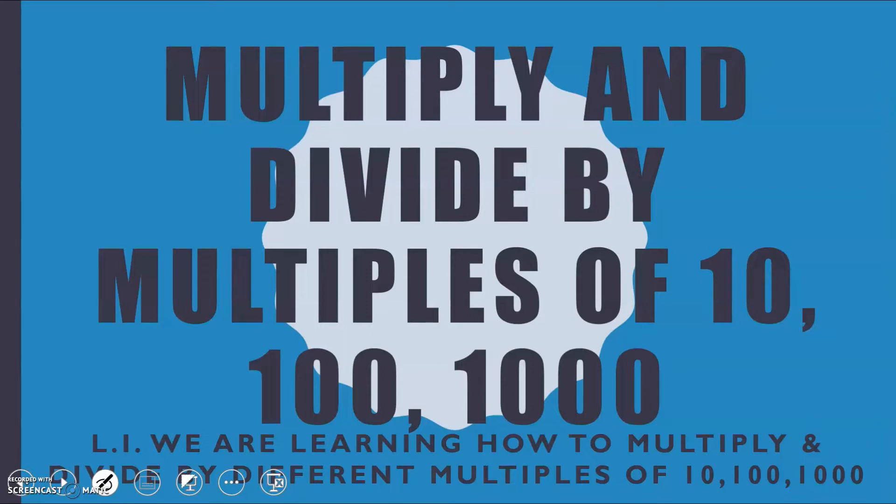So all that means is multiplying decimal numbers by things like 20, 30, 500, 600, 9000, 4000, numbers like that.